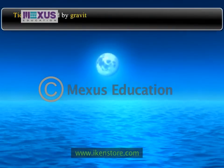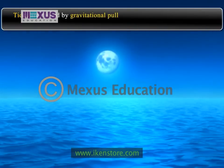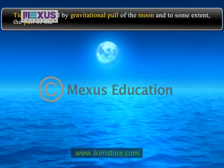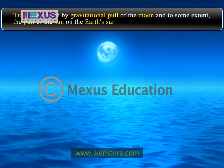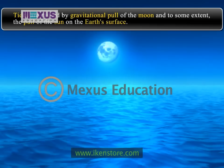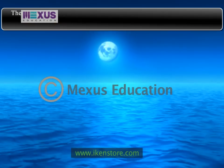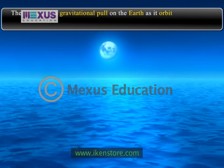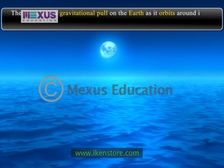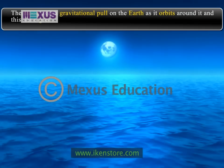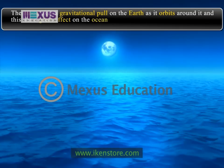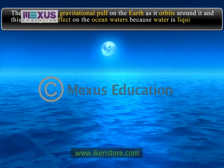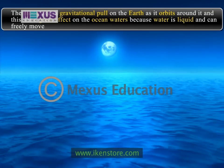Tides are caused by the gravitational pull of the moon and, to some extent, the pull of the sun on the earth's surface. The moon exerts gravitational pull on the earth as it orbits around it, and this has a great effect on the ocean waters because water is liquid and can freely move about.